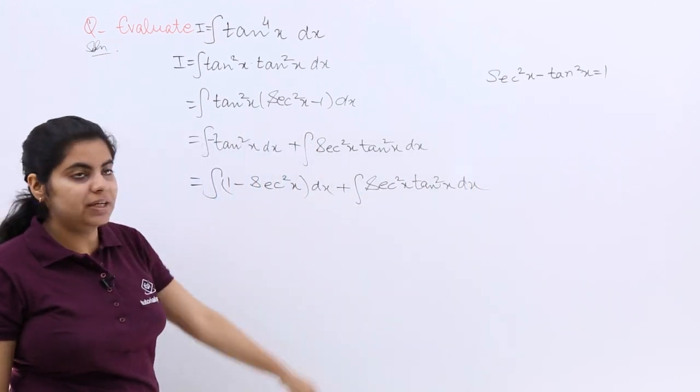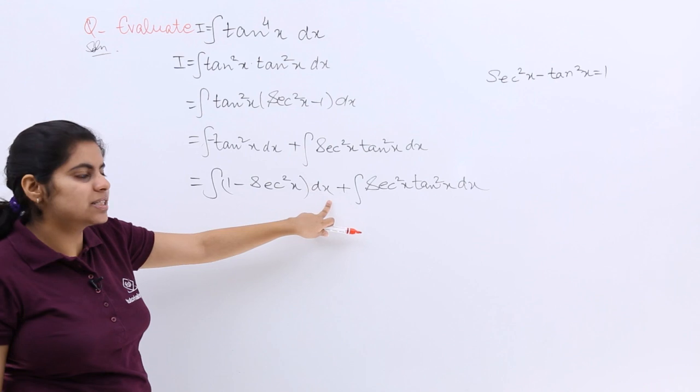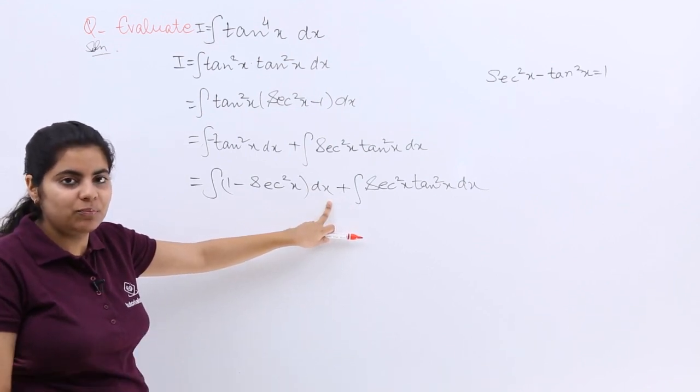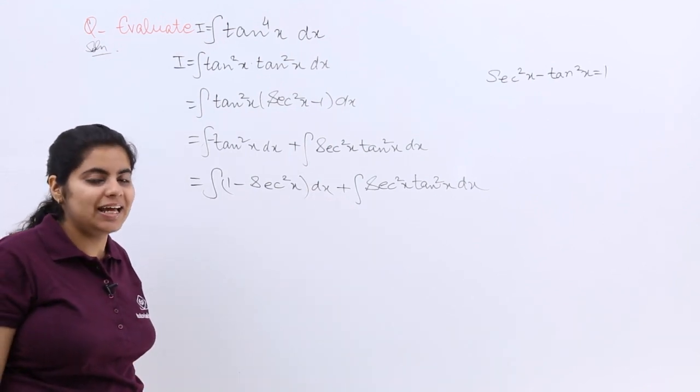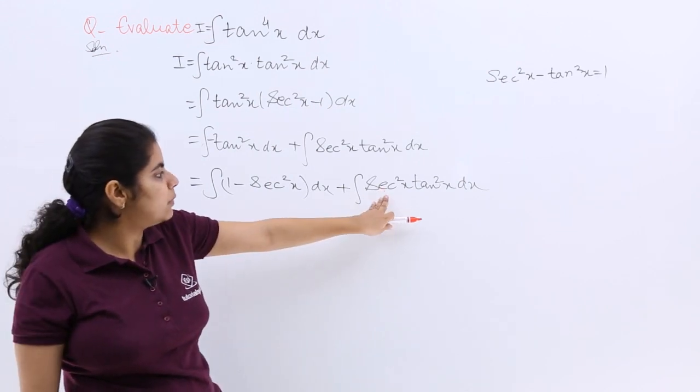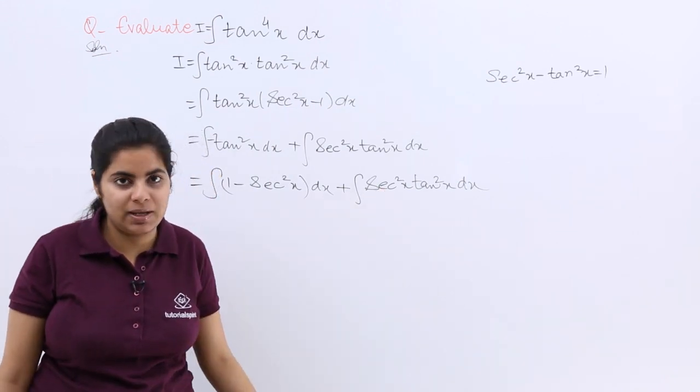Now see what can be done. I know 1 dx means the integration would give me x. Secant square x integration is tan x. What about secant square x tan square x?